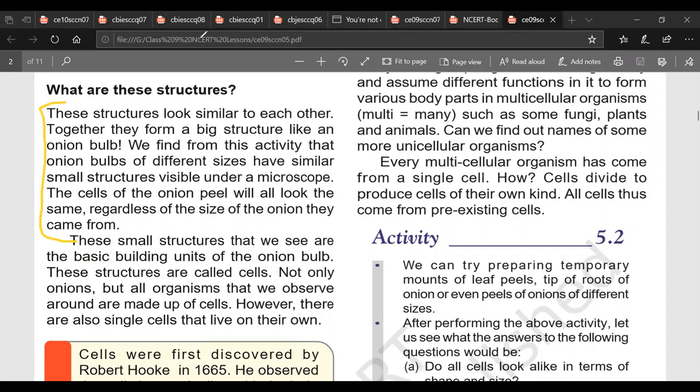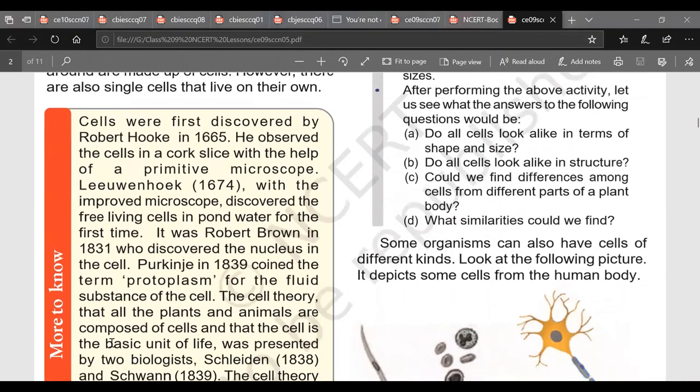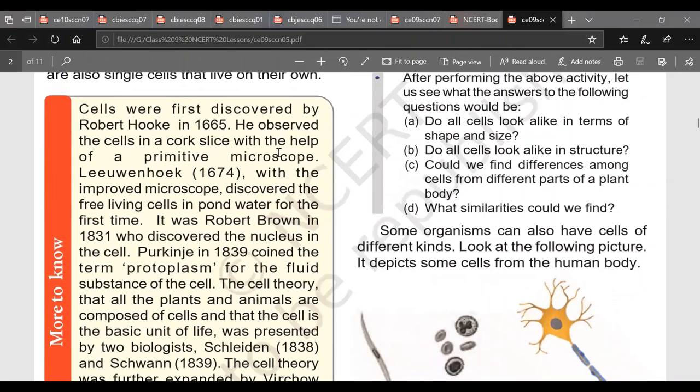And then comes this yellow box. Yellow box is history of cells. This is very important. So cells were first discovered by Robert Hooke in 1665. He observed cells in a cork slice with the help of a primitive microscope. So this we have done. Now comes Leeuwenhoek. Leeuwenhoek was a draper. He was a merchant. But again he had keen interest in life sciences.